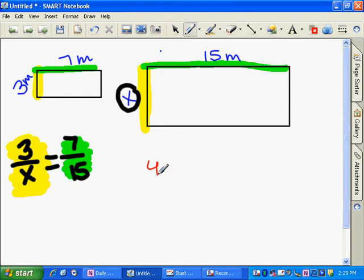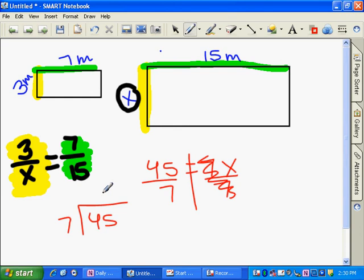So 3 times 15 is 45. 7 times x is 7x. I'm going to divide both sides by 7. And 45 divided by 7, 7 goes into 45 six times and I have a remainder of 3. So we can call this 6 and 3 sevenths. If the directions are not specific as to whether you need to give your answer as a fraction or a decimal, it doesn't matter to me which way you give it. A fraction is perfectly fine here.